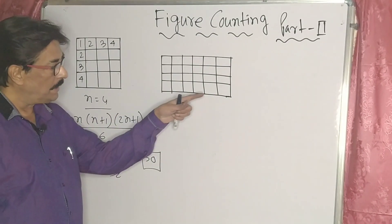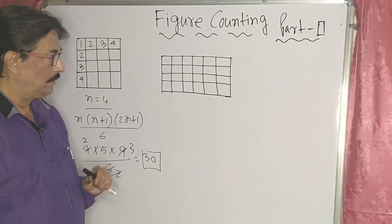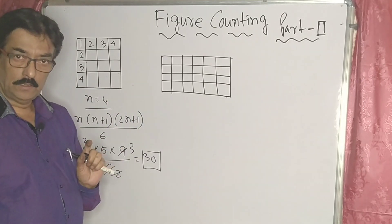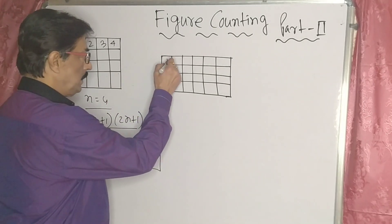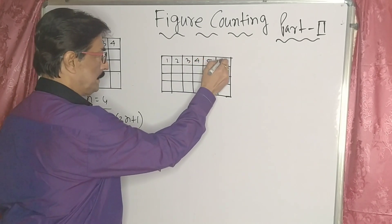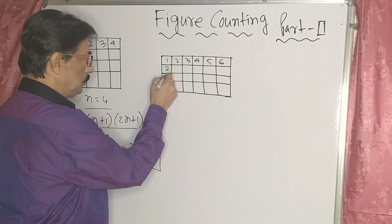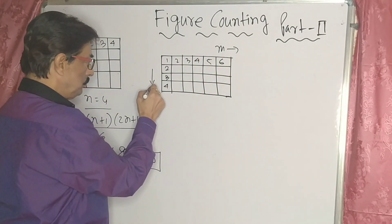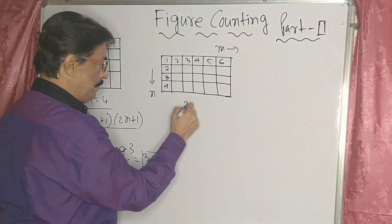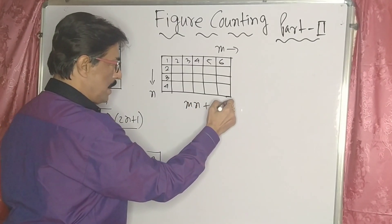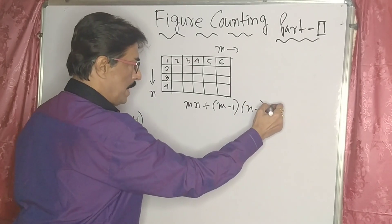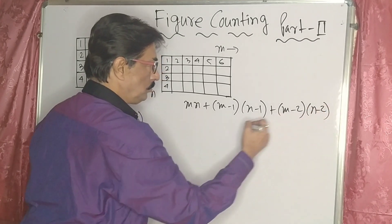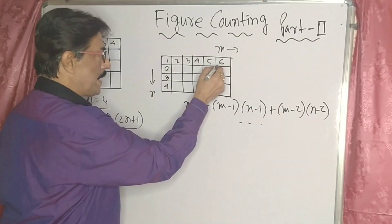Now they are giving the figure in the form of a rectangle, but you have to find out how many squares are inside the figure — only squares are to be treated as squares. Counting horizontal divisions: 1, 2, 3, 4, 5, and 6. Vertical divisions: 1, 2, 3, 4. Call the horizontal part m and the vertical part n. The formula is: m×n + (m−1)×(n−1) + (m−2)×(n−2) and so on. From the figure, m equals 6 and n equals 4.